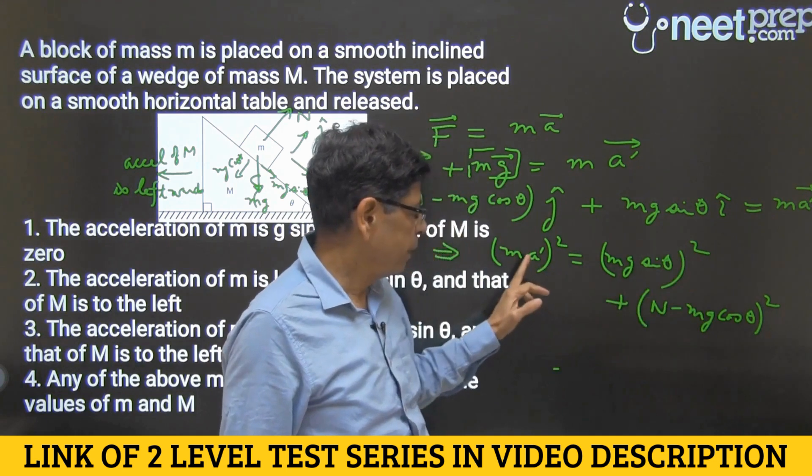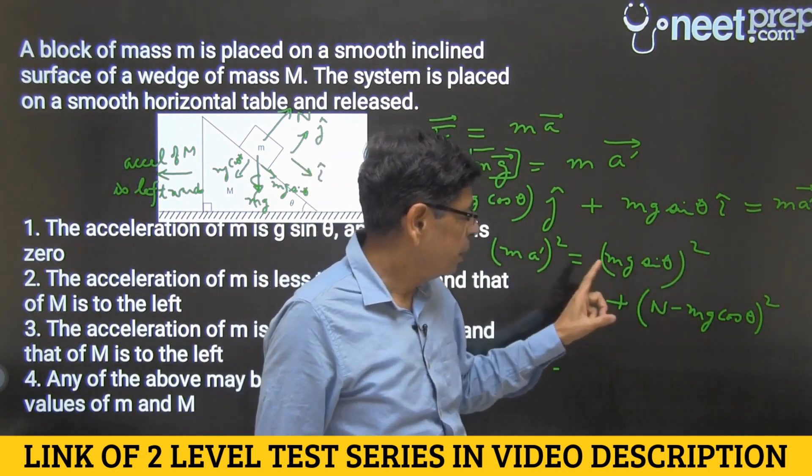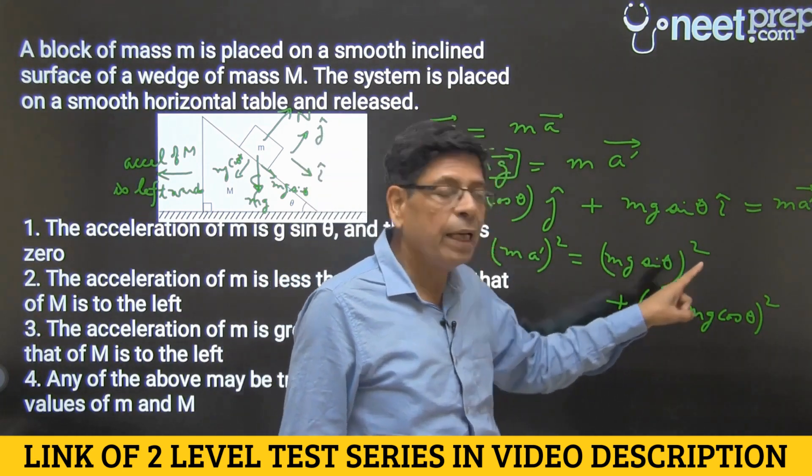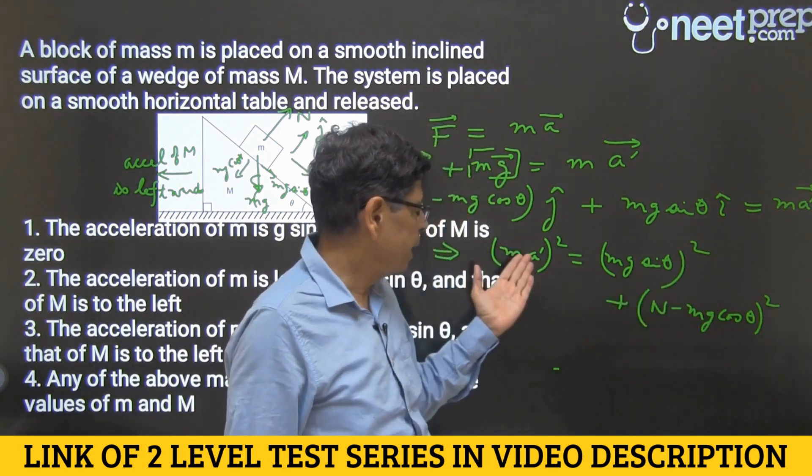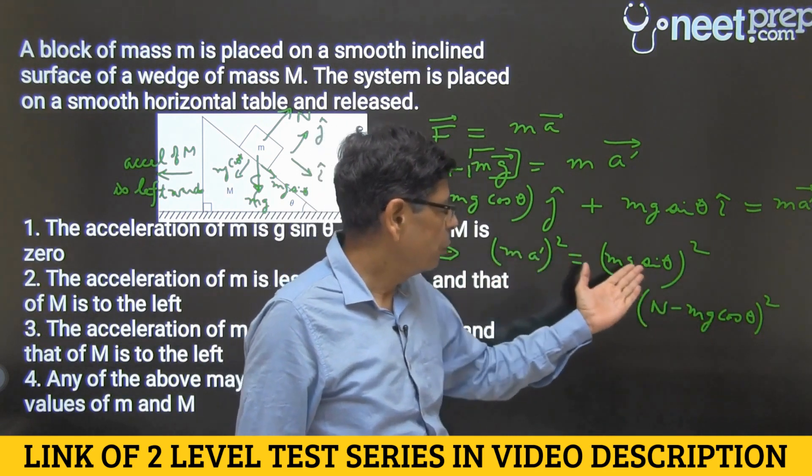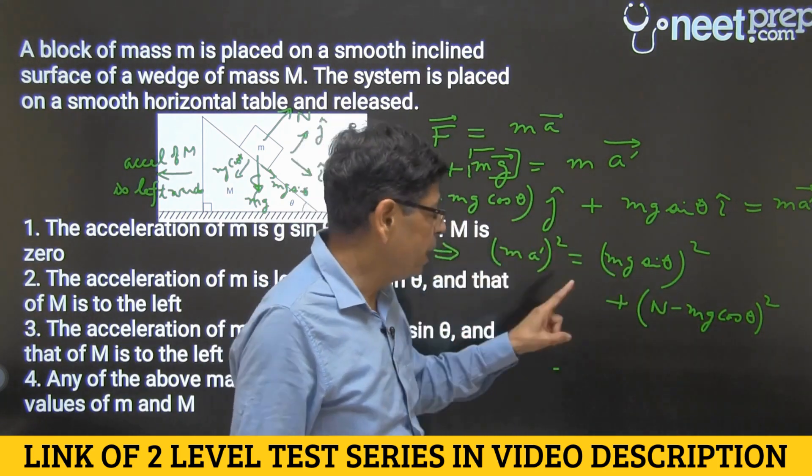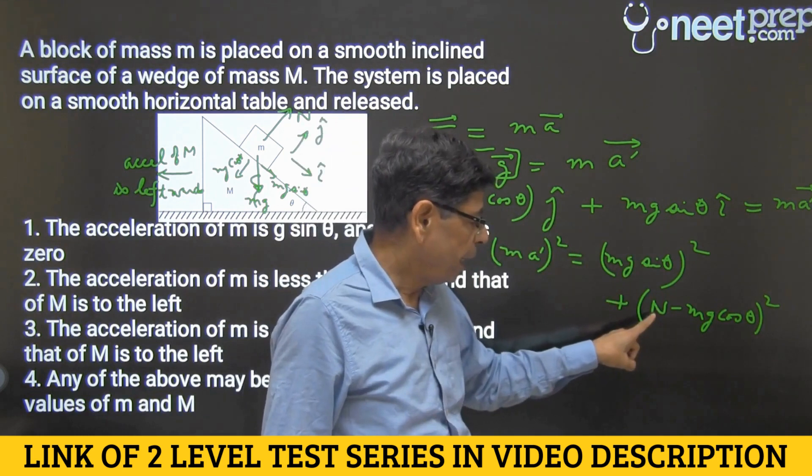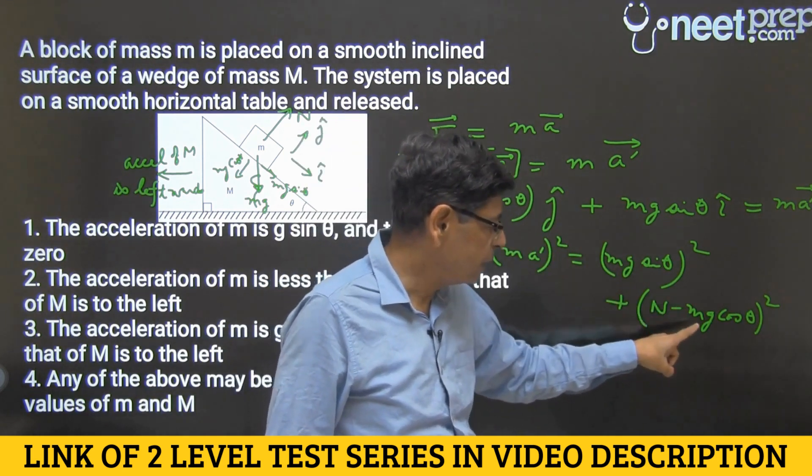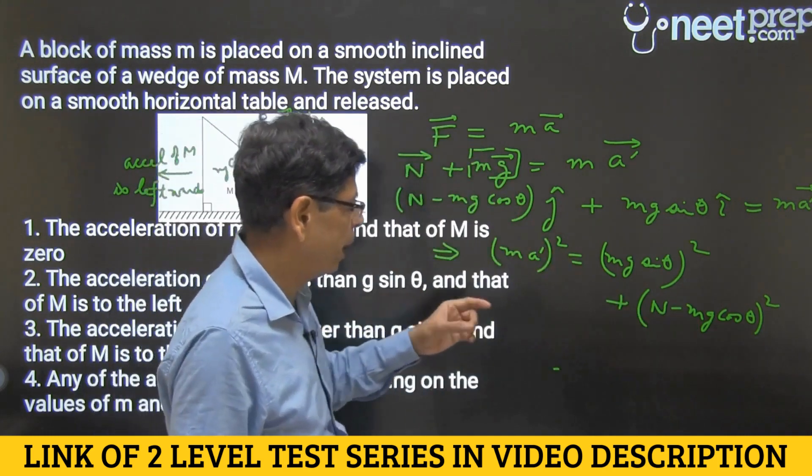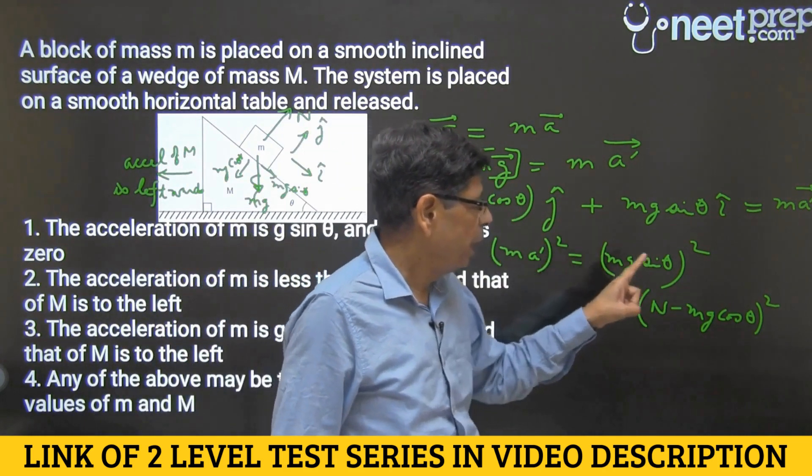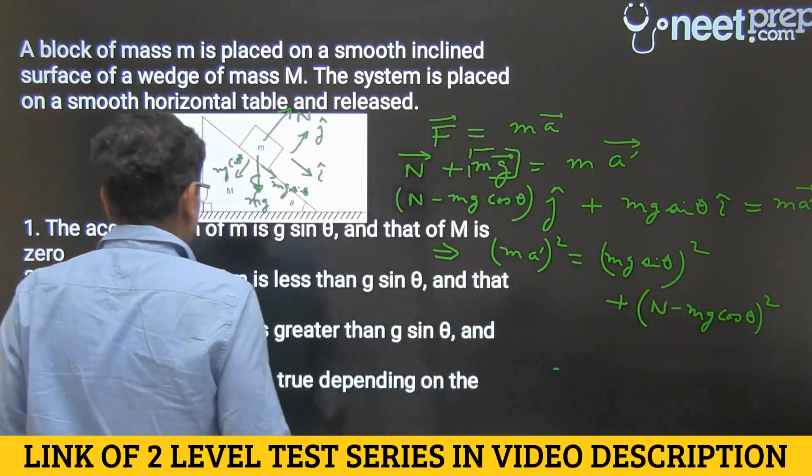The least value of a dash will occur when n equals mg cos theta and the second term on the right hand side will become zero. In that case the value of a dash will equal g sin theta. That's the least value. But whenever n would be less than mg cos theta, which is what is the case here, a dash would be greater than g sin theta.